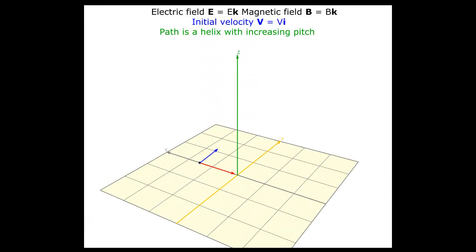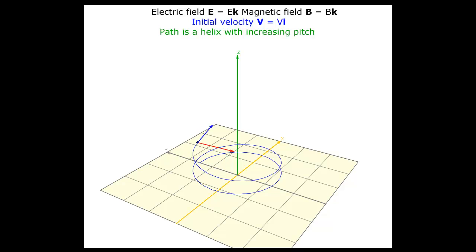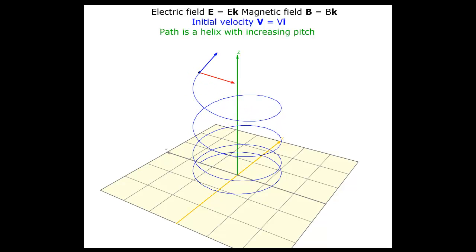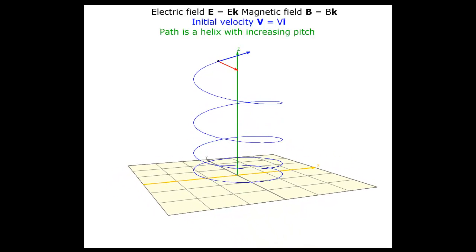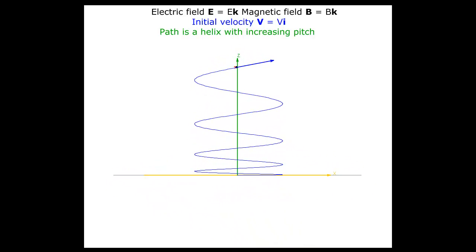The initial velocity is along the x-axis. The path would have been a circle in the x-y plane due to the magnetic field in the z-direction. We now have an electric field along the z-axis, so the charged particle will have an accelerated motion parallel to the z-axis in addition to the circular motion. This path is a helix with increasing pitch due to the increasing velocity in the z-direction. You can see the increase in distances traveled parallel to the z-axis in each revolution in the projection of the path in the x-z plane.